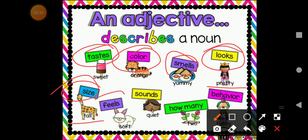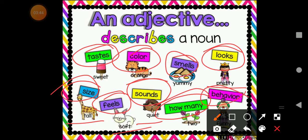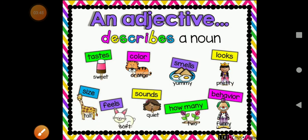Size, it is tall, short, hard, soft. Sound, it is quiet, noisy. How many? That means number also, one, two, three, four and so on. And behavior, how is the behavior, funny, silent.